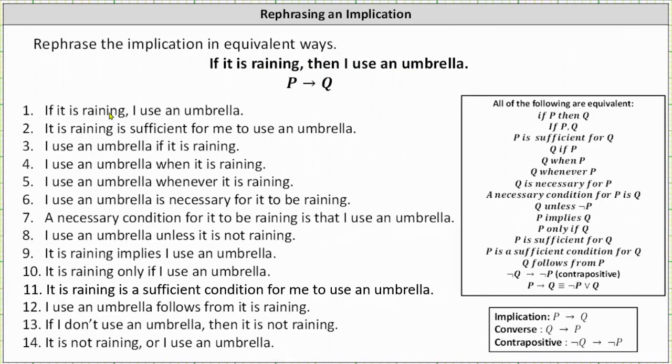So first, if it is raining, I use an umbrella. Number two, it is raining is sufficient for me to use an umbrella. Number three, I use an umbrella if it is raining.